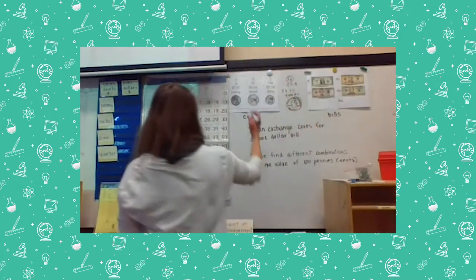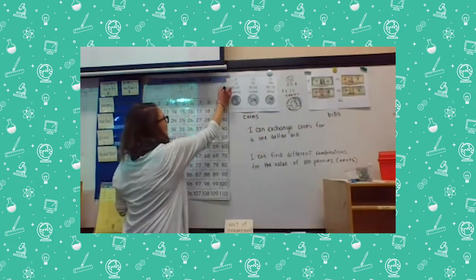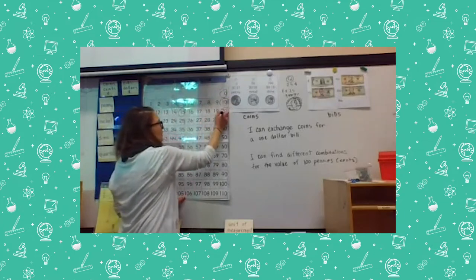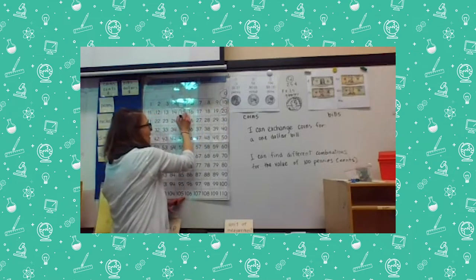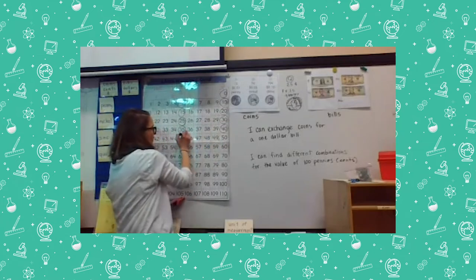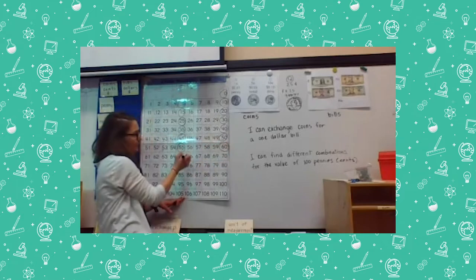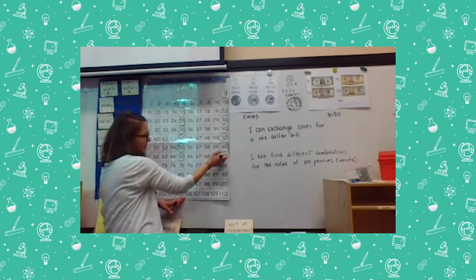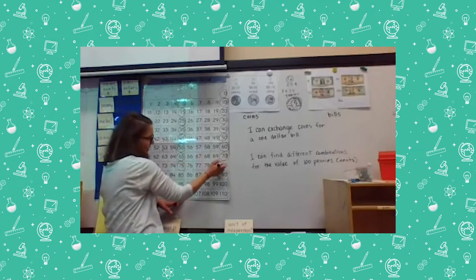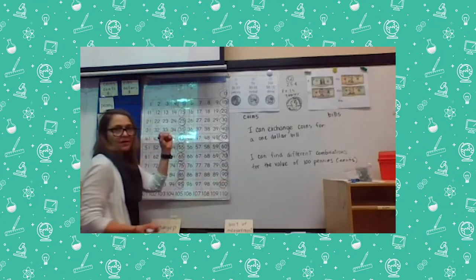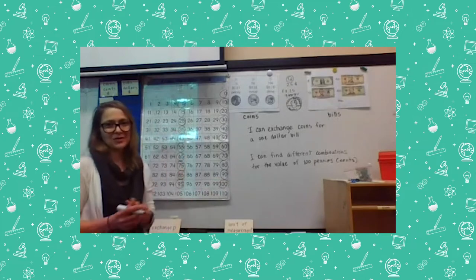We're going to start at zero: zero, five, ten, fifteen, twenty, twenty-five, thirty, thirty-five, forty, forty-five, fifty, fifty-five, sixty, sixty-five, seventy, seventy-five, eighty, eighty-five, ninety, ninety-five, one hundred — and we're going to stop there. That's usually my signal for stop in the classroom.